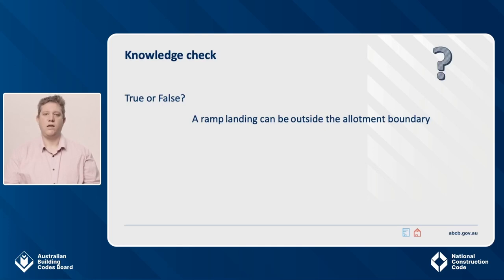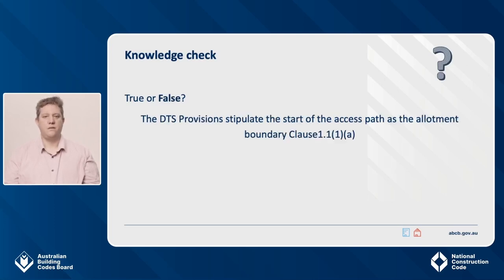Let's check in with a quick knowledge check. True or false: as part of the DTS solution, a ramp landing can be outside the allotment boundary. The answer is false. The DTS provisions stipulate that the start of the access path is the allotment boundary, as stated in Clause 1.1. Therefore, the use of the footpath to meet the ramping or landing requirements would require a performance solution.